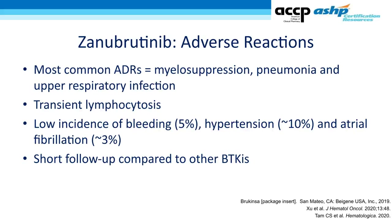Zanabrutinib, the third BTK inhibitor in the CLL arena, has similar incidences of bleeding, hypertension, and AFib as acalabrutinib — less than ibrutinib — though data are still forthcoming given its recent approval. We also see some instances of myelosuppression, pneumonia, upper respiratory infection, and the transient lymphocytosis seen with other agents.